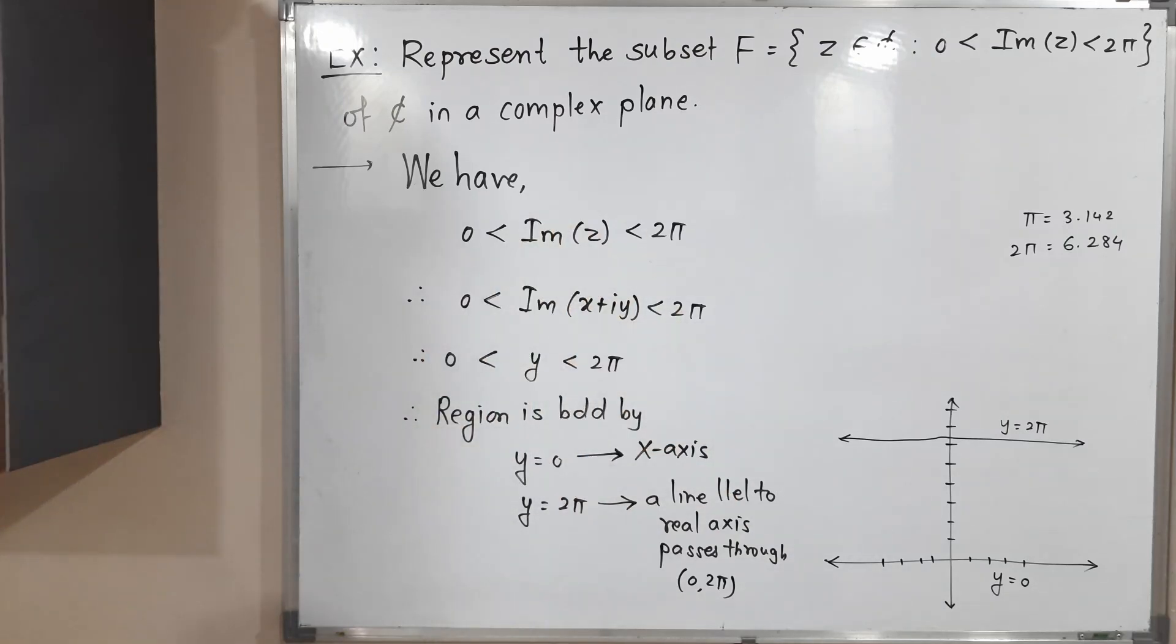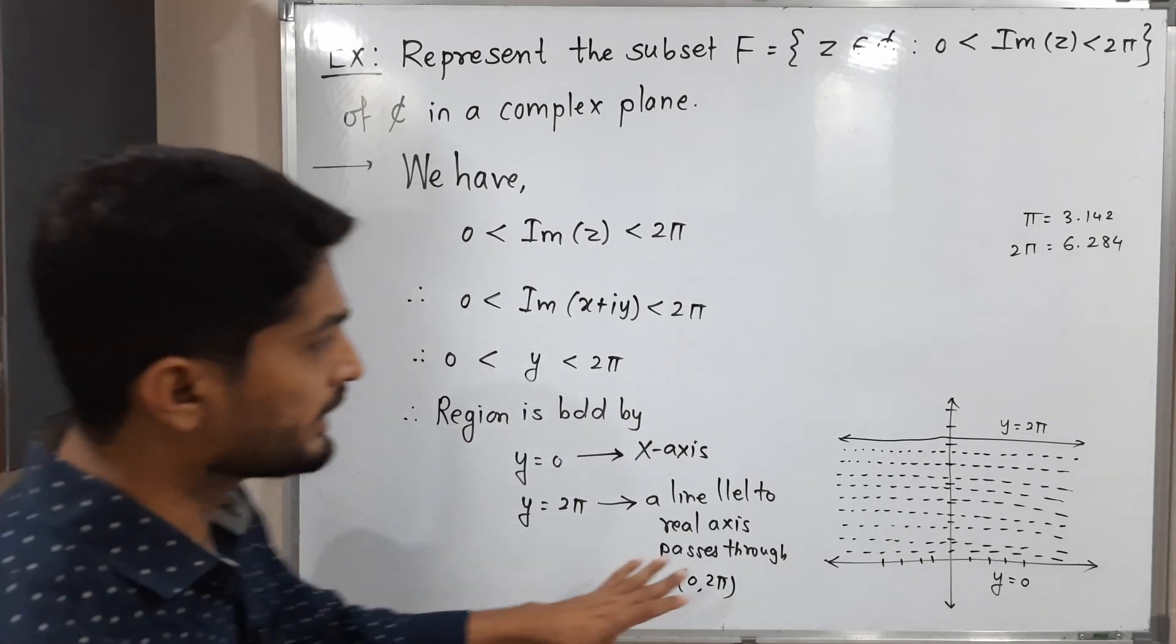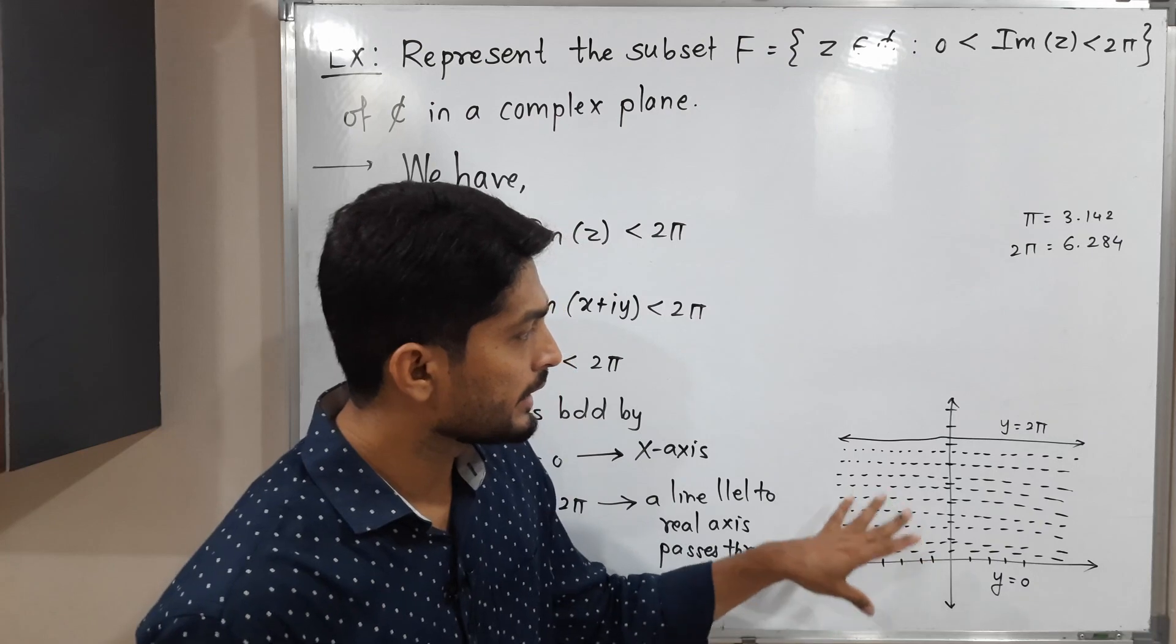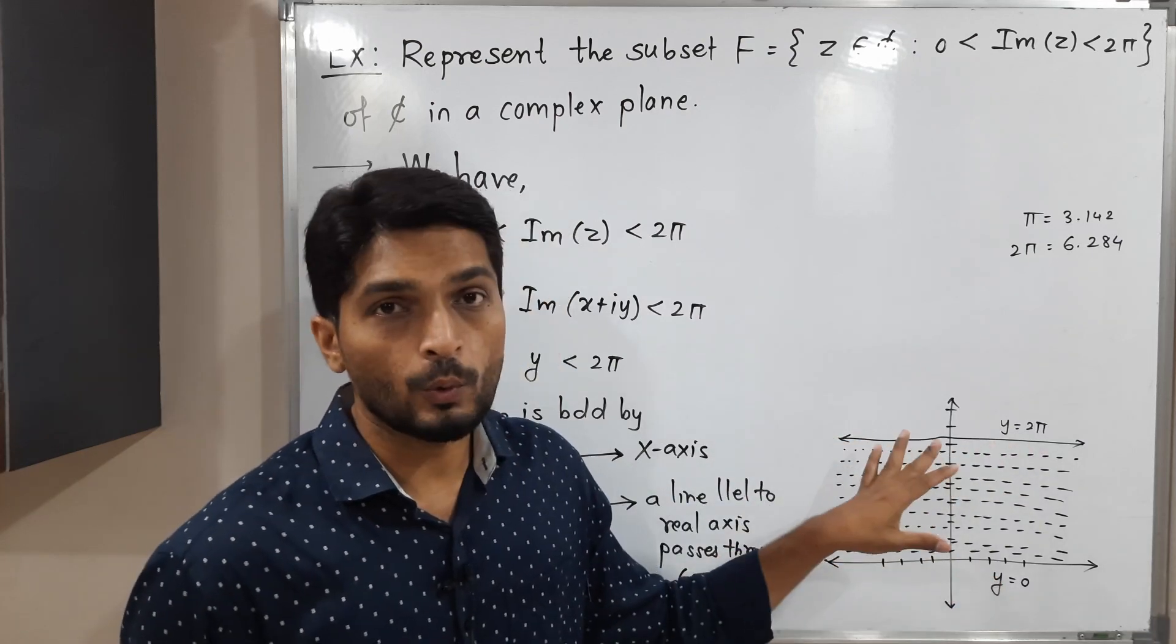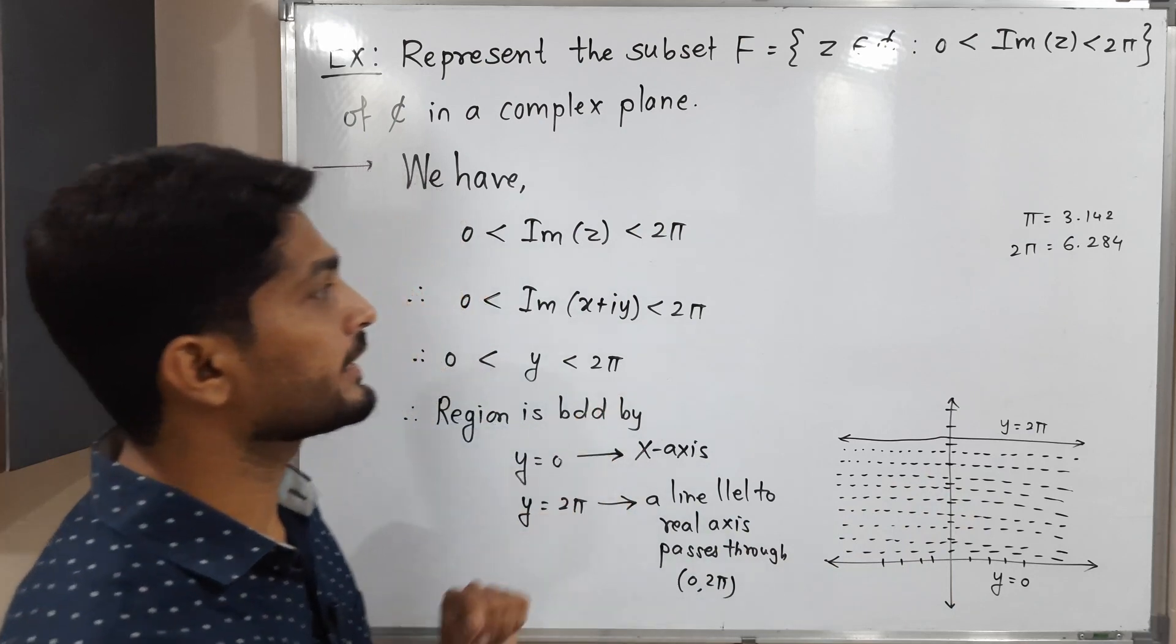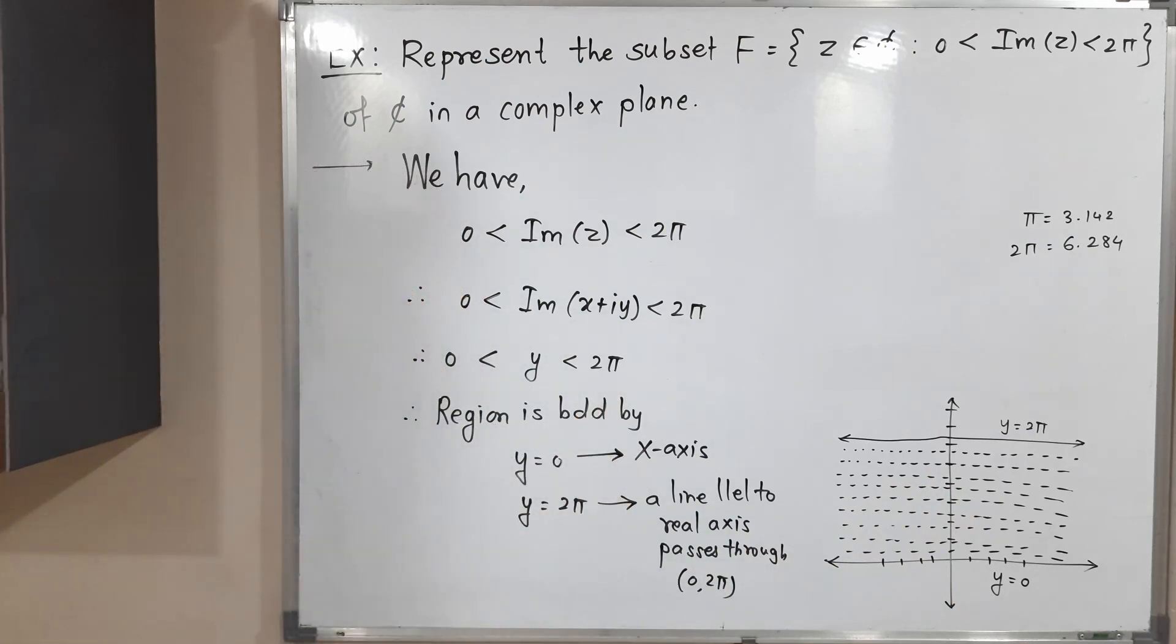So let me show here... I have shown in a diagram now. In a complex plane, all points which lie between y equals 2π and y equals 0 are elements of given set F. So make a screenshot of it. Thank you, see you.